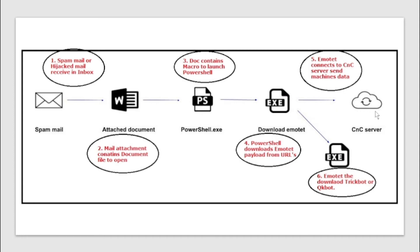CNC is nothing but command and control — a computer controlled by an attacker to send commands to systems compromised by malware and to receive stolen data from the target network. Once connected to the CNC, Emotet tries to download TrickBot, also known as QKBot. TrickBot is a banking trojan that can steal credentials and personal data. The whole malware is named Emotet, but the main component working here is TrickBot.